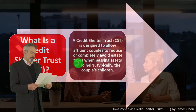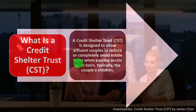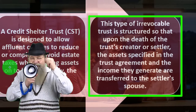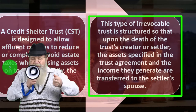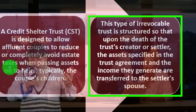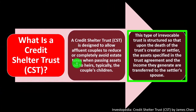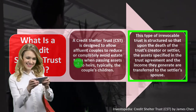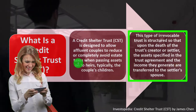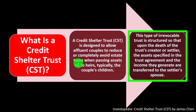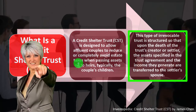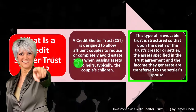This type of irrevocable trust is structured so that upon the death of the trust's creator or settlor, the assets specified in the trust agreement and the income they generate are transferred to the settlor's spouse. Normally, when passing assets at death, the first tool we think of is a will — but with a will you may still be subject to the probate process, which can be costly. So you might use tools such as trusts instead.